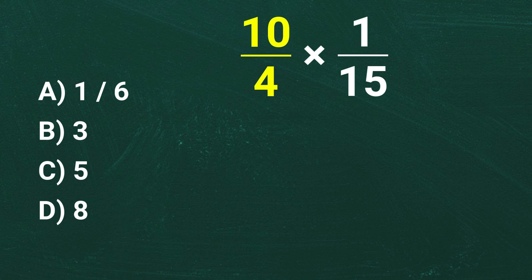Both 10 and 4 can be divided by 2. So 10 divided by 2 is equal to 5, 4 divided by 2 is equal to 2. So now our expression is 5 over 2 times 1 over 15.